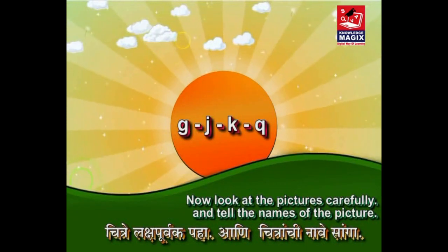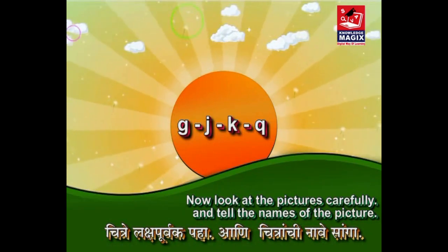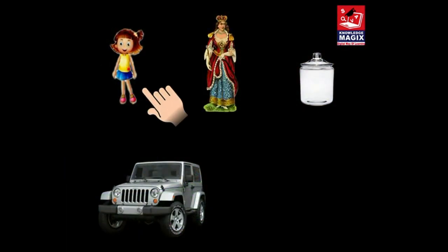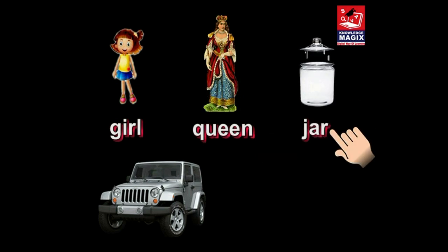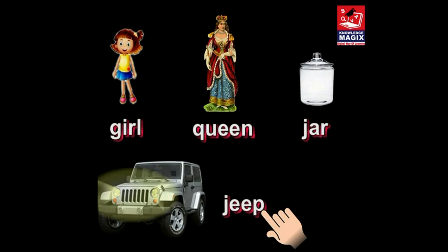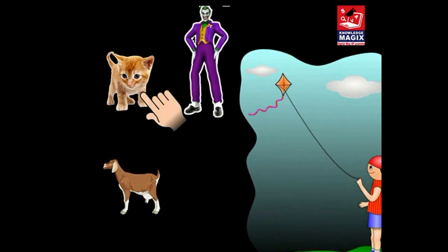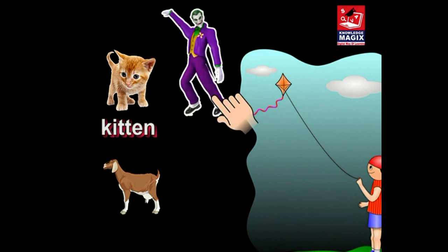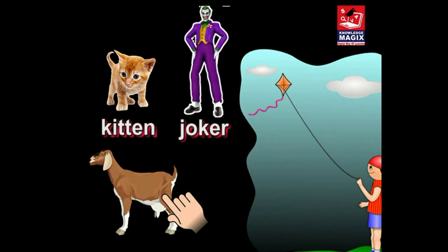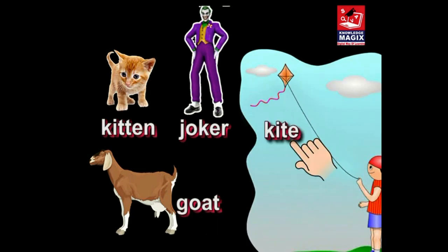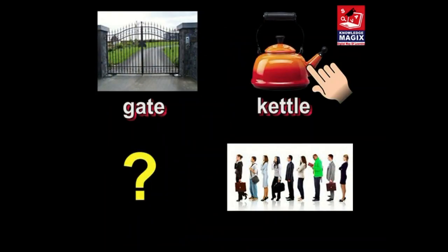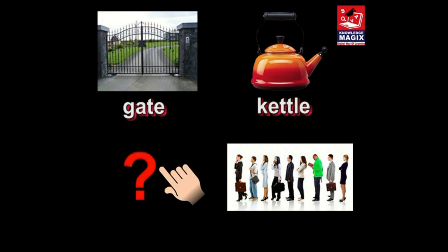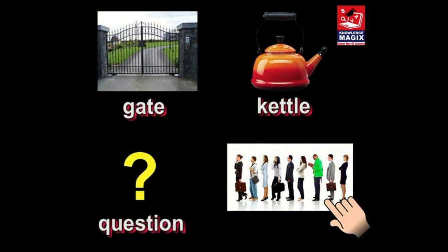Now look at the pictures carefully and tell the names of the pictures. What is this? Bird. This is Queen. This is Jar. This is Jeep. This is Kitten. This is Joker. This is Goat. This is Kite. This is Gate. This is Kettle. This is Fashion. This is Q.